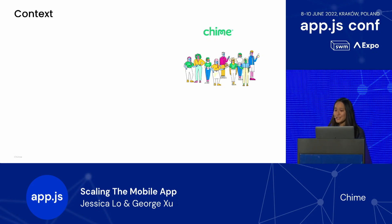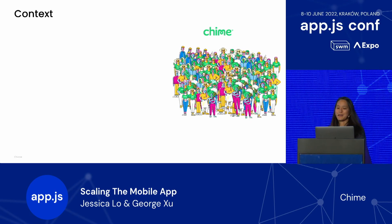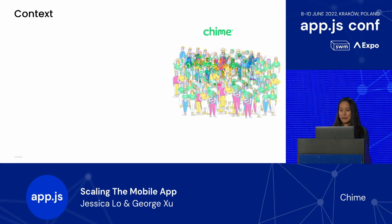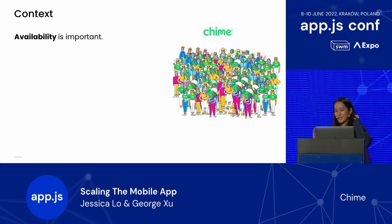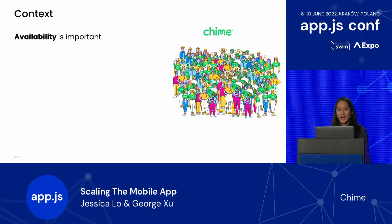We'd like to continue to support more features to help our members achieve financial peace of mind. In addition to growth of feature sets, we're also rapidly growing our member base. Over the past few years, we've gone from serving thousands of members to now many millions and counting. For these millions of members, the Chime mobile app is their gateway into seeing and accessing their money. Availability is incredibly important to maintain here. Availability is the ability of our members to access the information and resources they need when they need it. So what's the problem here? What are the challenges to maintain high availability at Chime as we continue to scale?